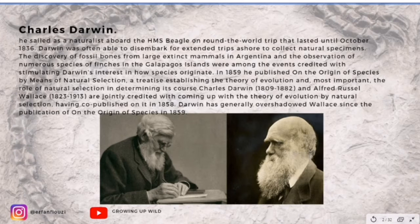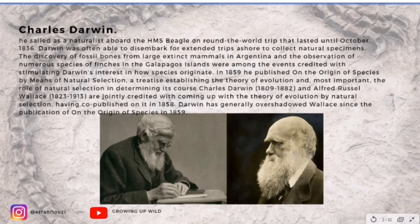The discovery of fossil bones from large extinct mammals in Argentina and the observation of numerous species of finches in the Galapagos Islands — something which Charles Darwin was very famous for — were among the events that stimulated Darwin's interest in how species originated.